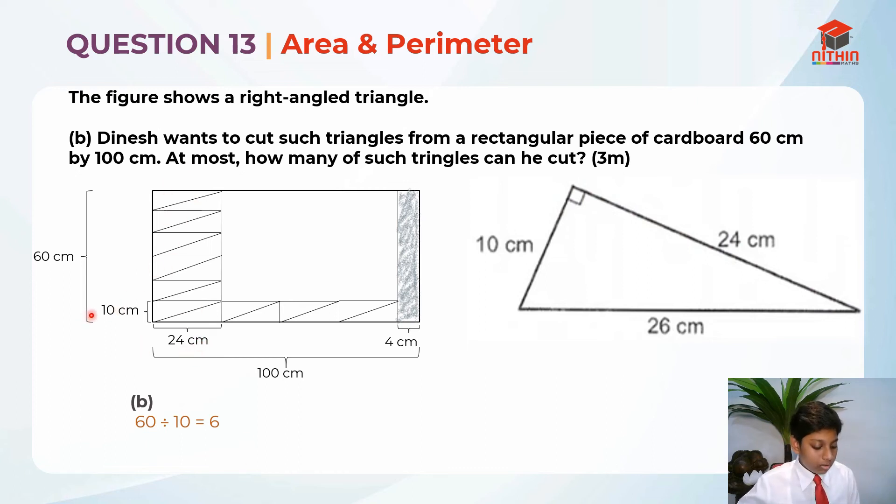Same for the length. How many rectangles can he fit? Must take 100 divided by 24 which is equal to 4 remainder 4. So he can fit four rectangles, one, two, three, four. But then this 4 cm will be discarded because he can't use it anymore. He can only discard it, just throw away.